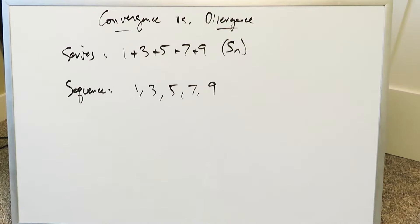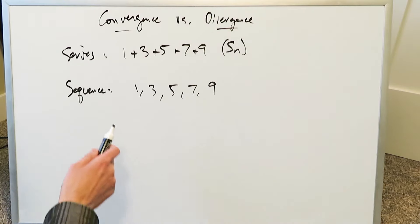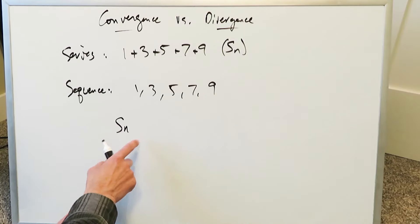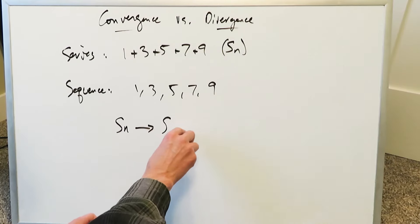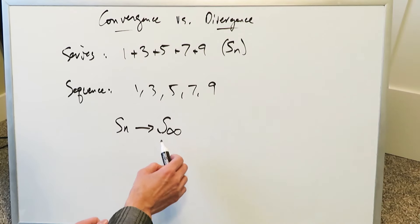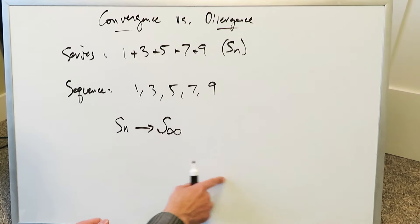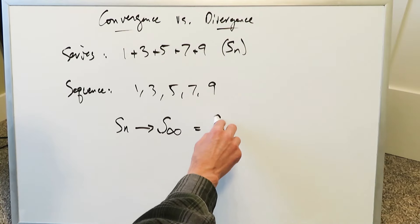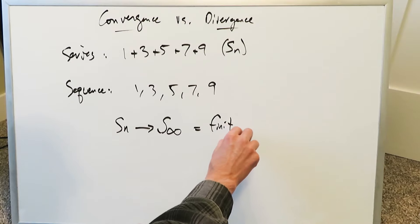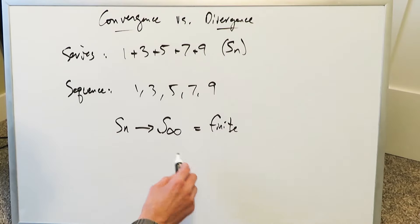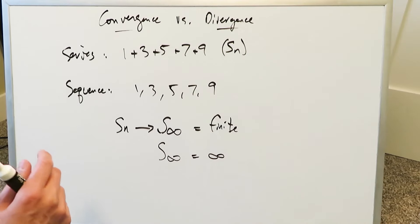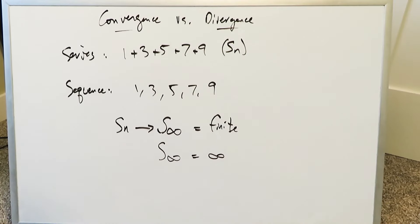When we're talking about convergence and divergence, we need to pay special attention. When you have convergence, the sum of those terms — especially looking at the sum from the very first term up to infinity — will give you a finite value. That's convergence. In a divergence scenario, the total sum equals infinity. That's the basic difference between convergence and divergence.